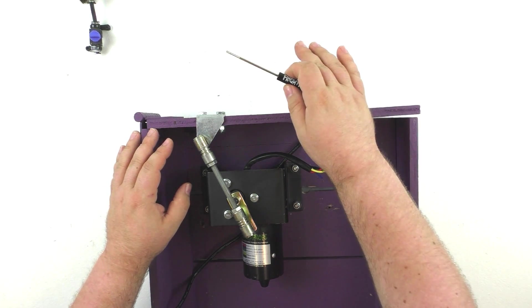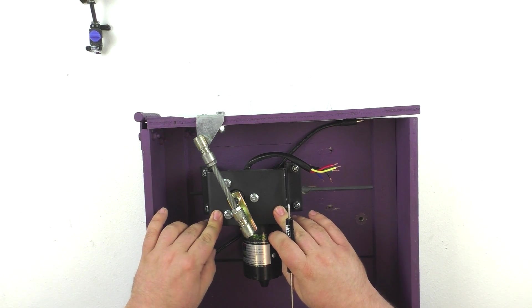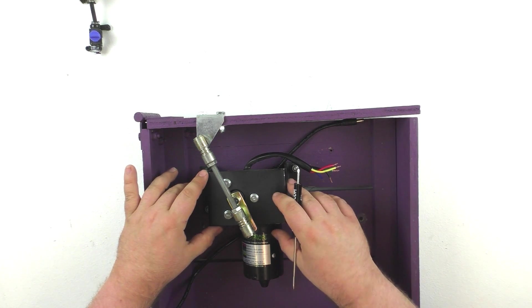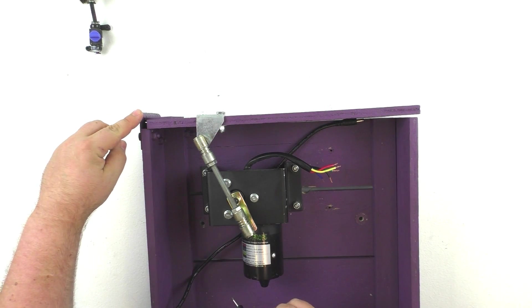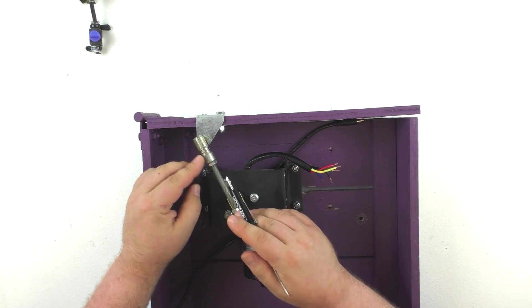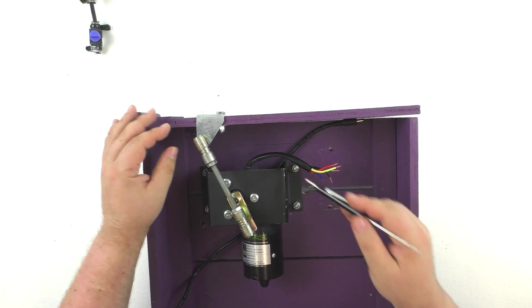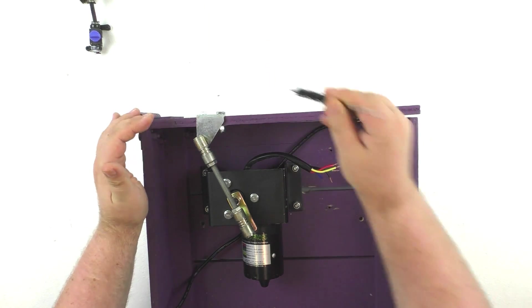You can adjust how far the lid opens either by moving where the motor is mounted inside the box, physically moving it farther up or down or closer to the pivot point, the hinge, or you can lengthen the linkage. There are different lengths of the linkage available, so you can have a longer linkage, or you can move the second bracket closer to the linkage point, which will also increase how far the lid opens.